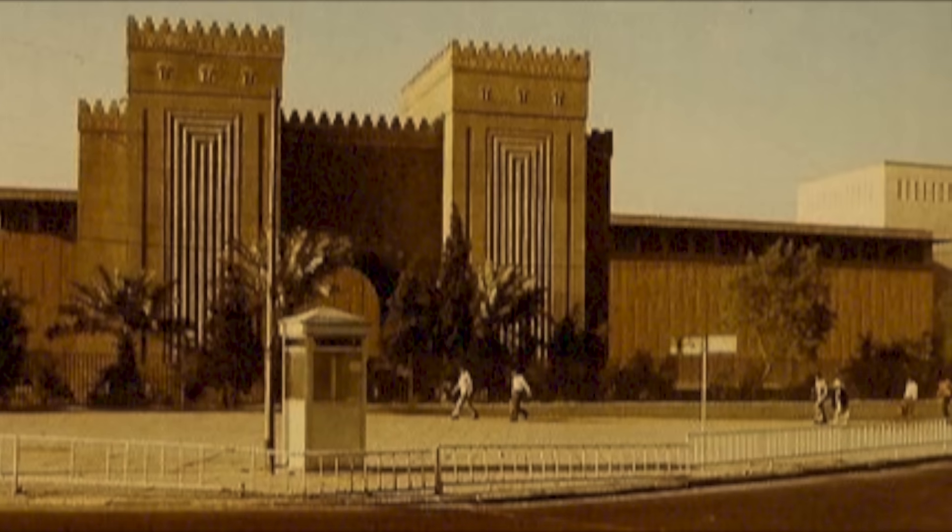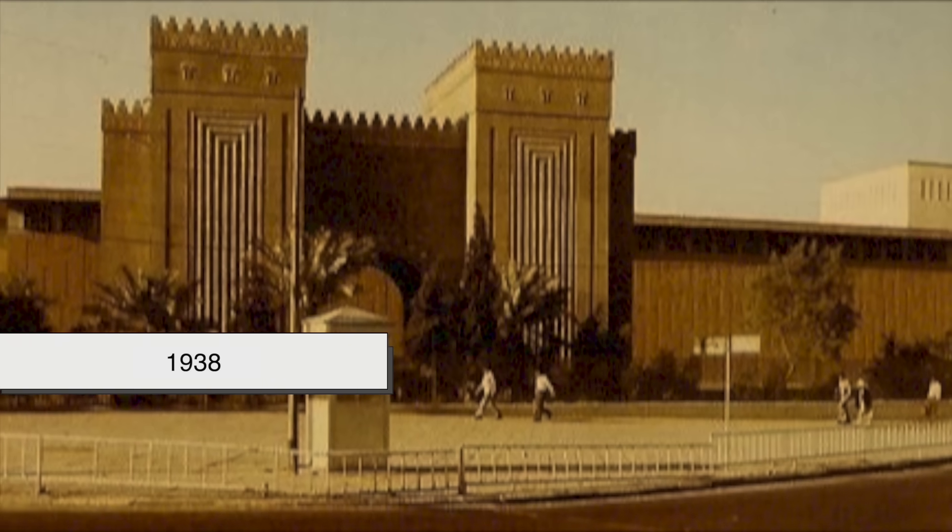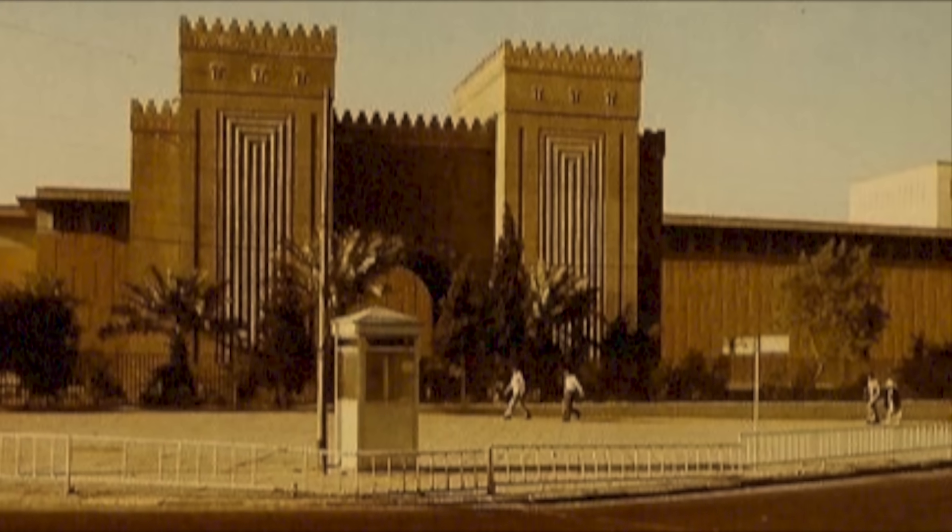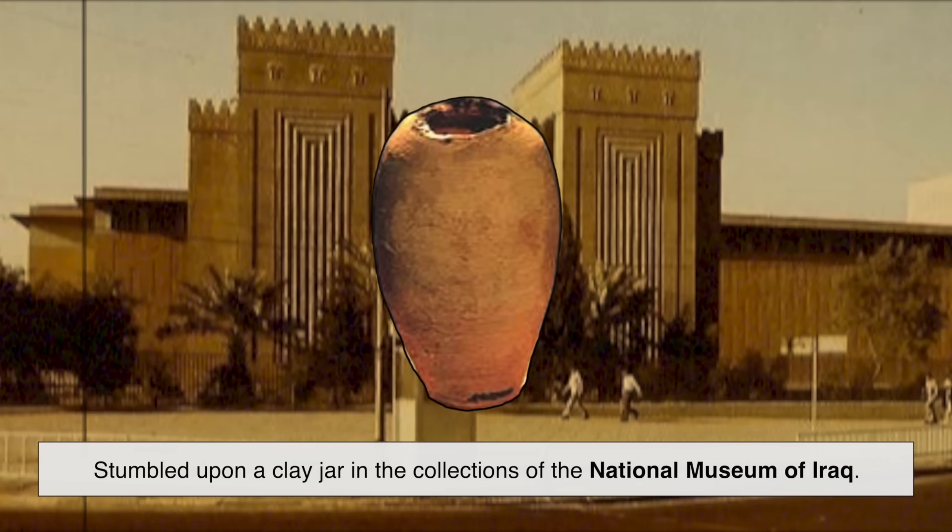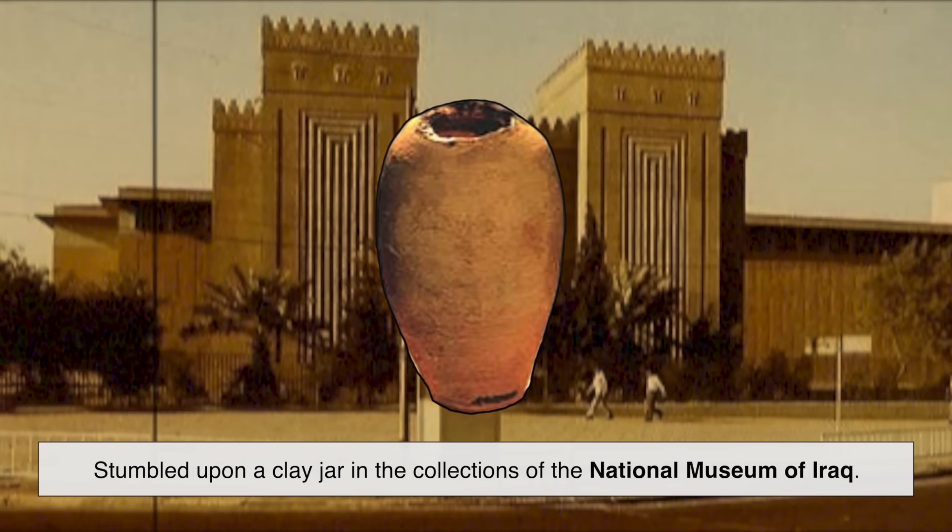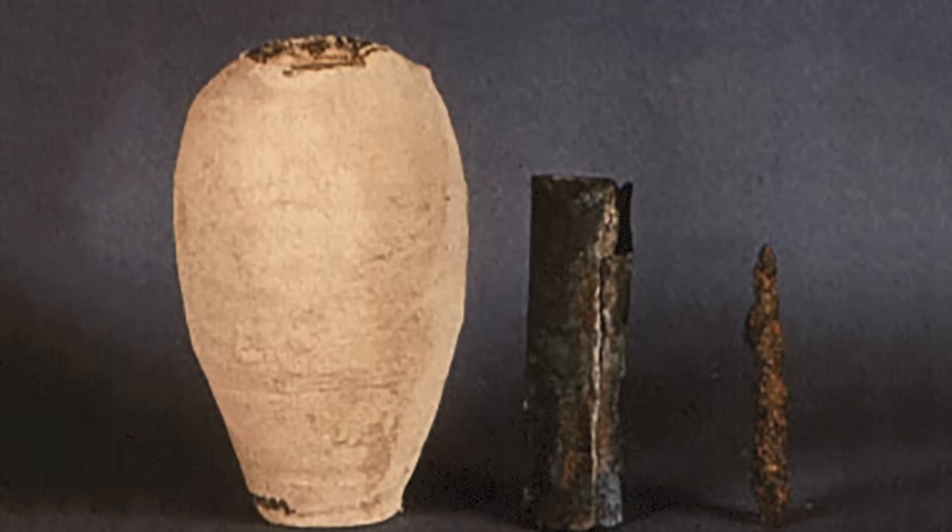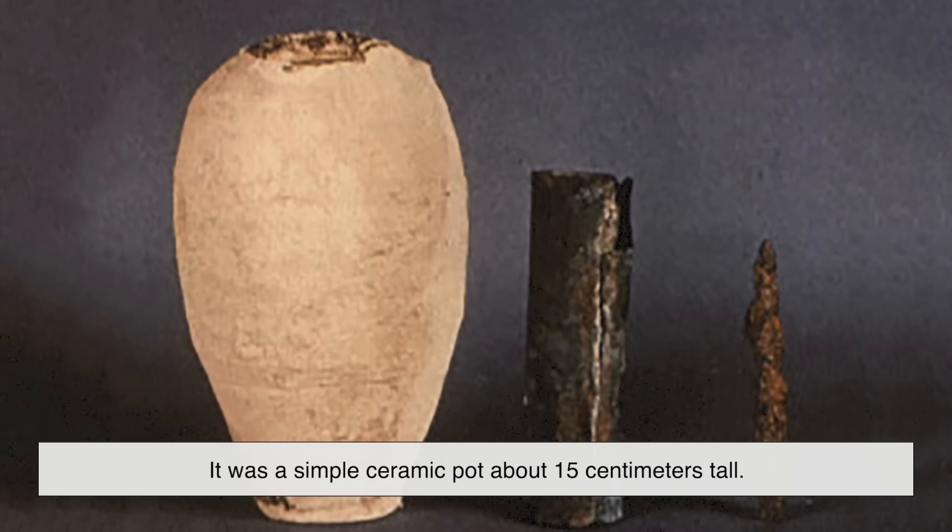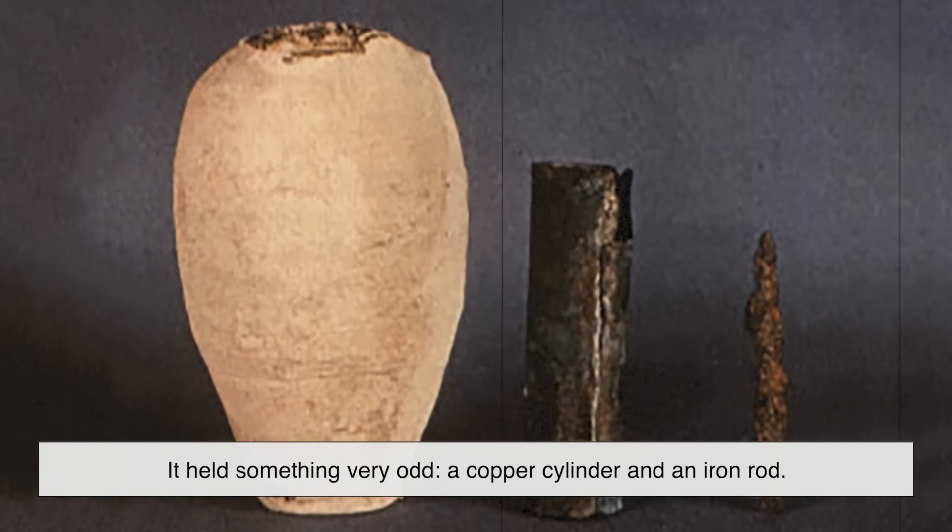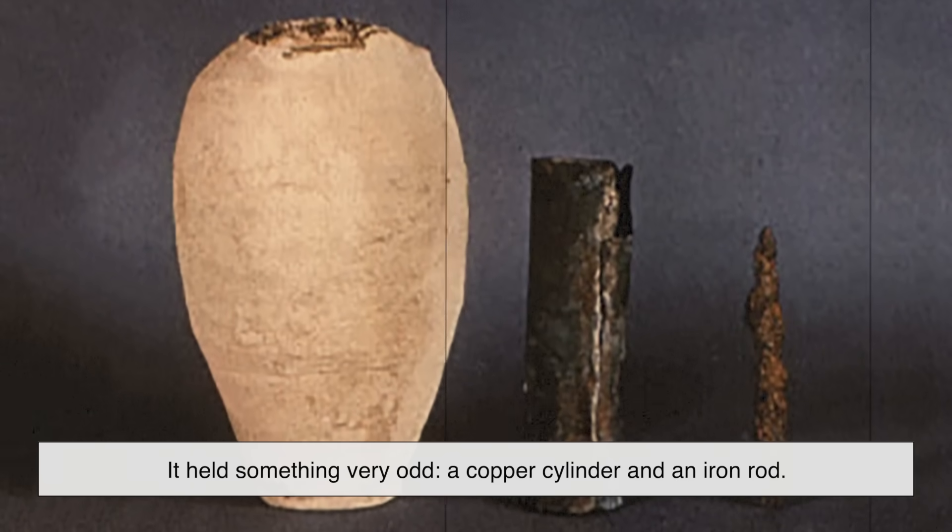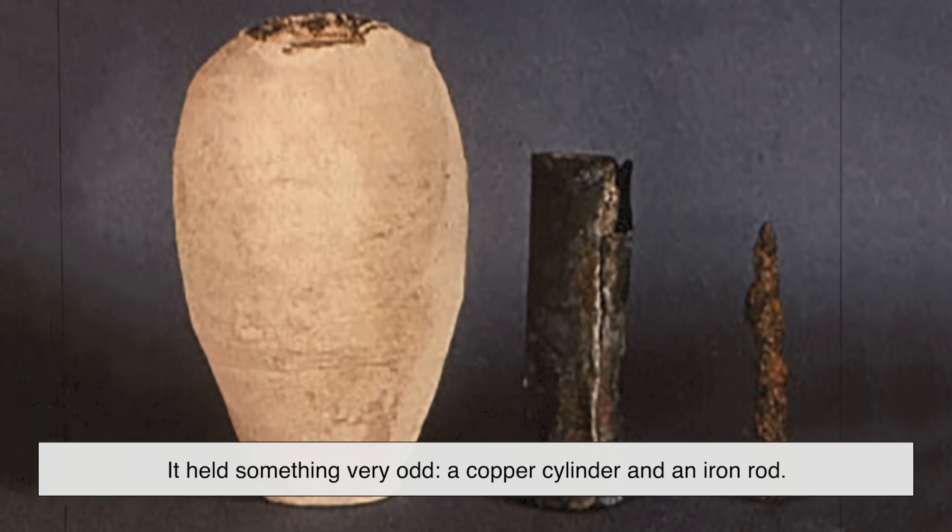The story begins in 1938, when a German archaeologist named Wilhelm Koenig stumbled upon a clay jar in the collections of the National Museum of Iraq. The jar itself wasn't unusual. It was a simple ceramic pot about 15 centimeters tall, but inside it held something very odd. A copper cylinder and an iron rod.